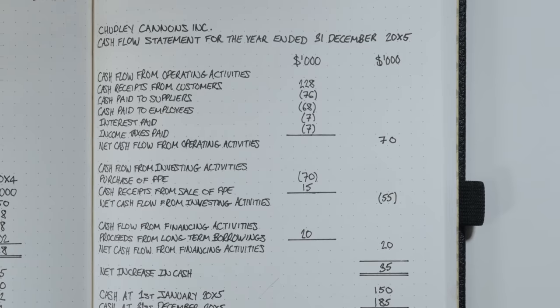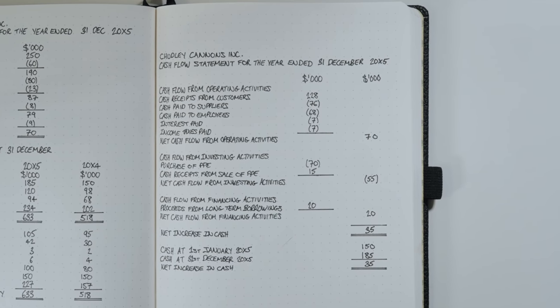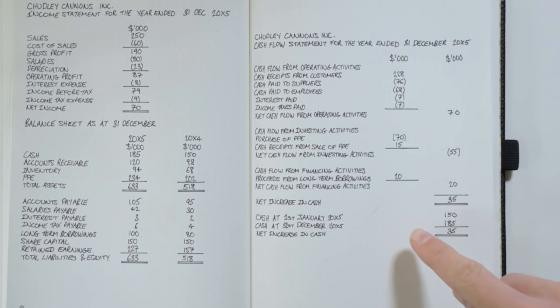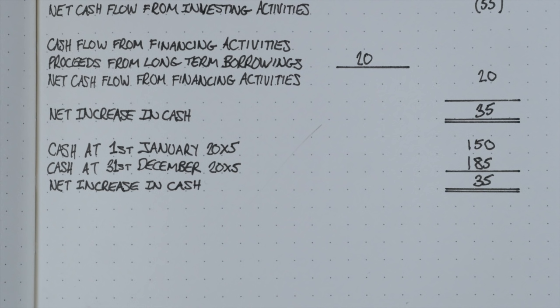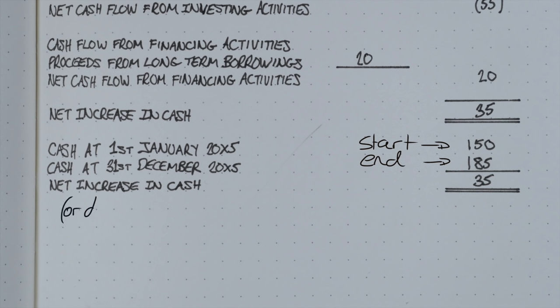The cash flow statement covers a period of time, which we put in the header. Here we have the year ended the 31st of December, but this could easily cover a quarter or a month. It's easiest to interpret the cash flow statement by starting at the bottom and working our way back up. At the bottom we have cash at the start and end of the year, which we get from the balance sheet. When we take the difference between these numbers, we get the net increase or decrease in cash for the year — in this case $35,000. What we do above is explain how and why the cash balance changed, summarizing what cash was spent on and what the sources were, reconciling it all back to this number.